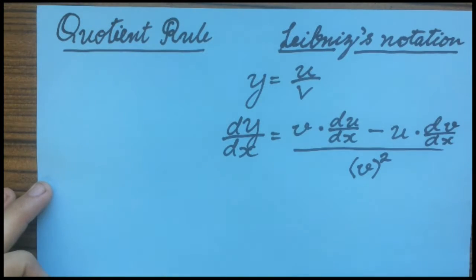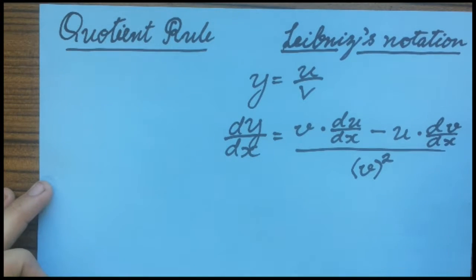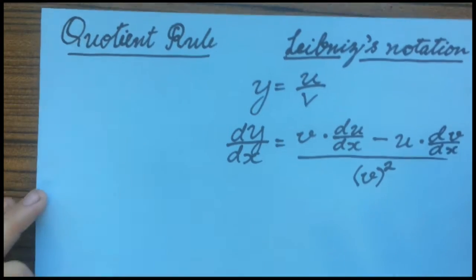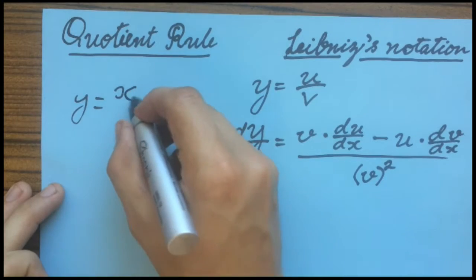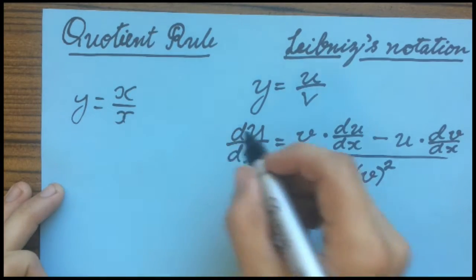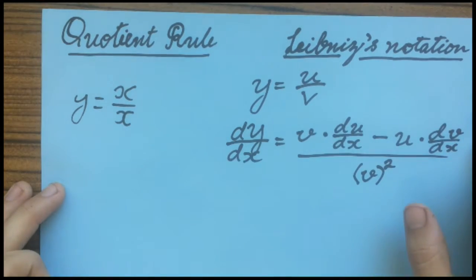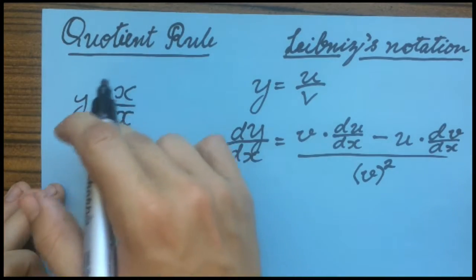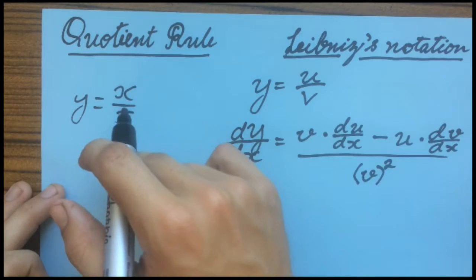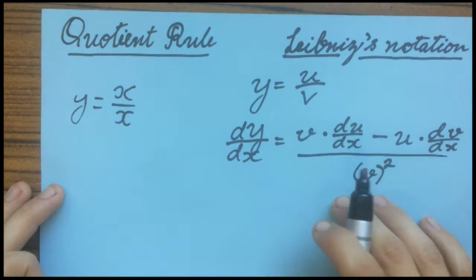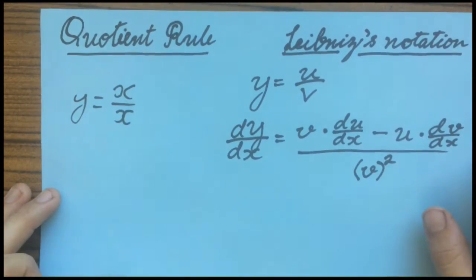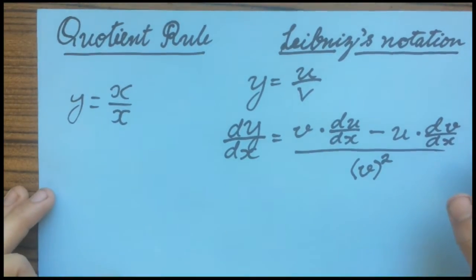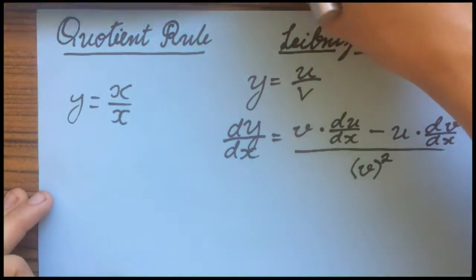So, an example of the Quotient Rule — a very simple example — would just be Y equals X over X. You can do this in a much simpler way, but the Quotient Rule is the way to go when you get more complex. So, let's start with an example.